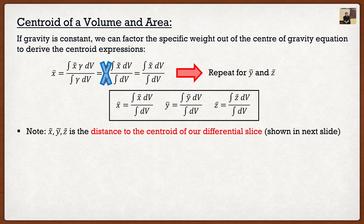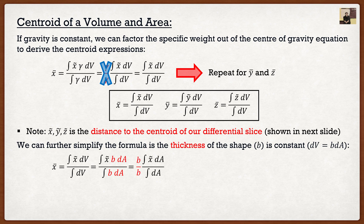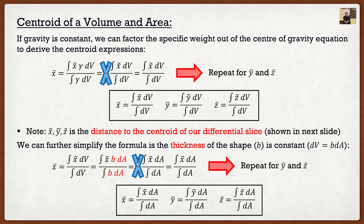To find the centroid of an area, we take the volume formula and note that if a shape — say a rectangle — has constant thickness b into the page, we can factor out b, since volume equals b times area. Because b is constant it cancels the same way specific weight did, and we're left with integrals with respect to area dA instead of volume. Repeating this for ȳ and z̄ gives us the centroid-of-area formulas.